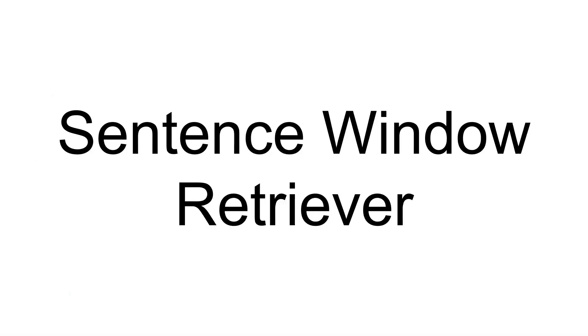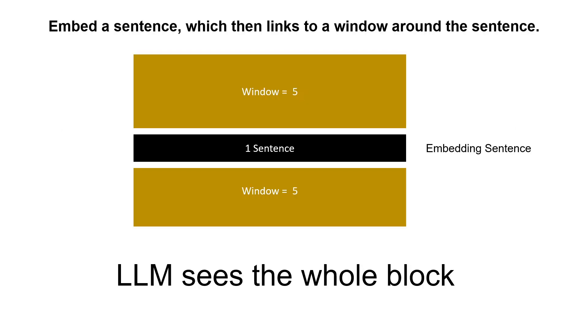We'll be talking about the sentence window retriever and comparing it with semantic ranking. The sentence window retriever is simple: we embed only one sentence but put a window around that sentence. The window is configurable — in this case we've set it to 5. So the LLM sees the whole block of surrounding context.